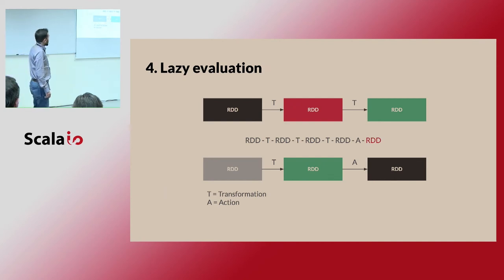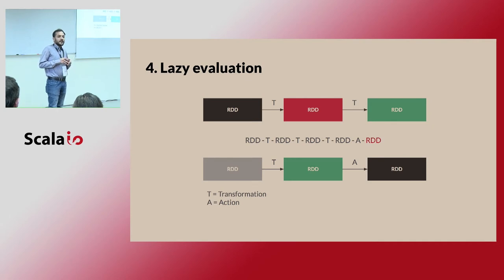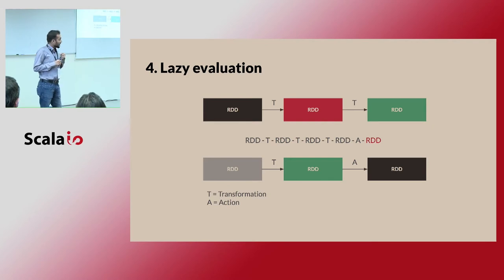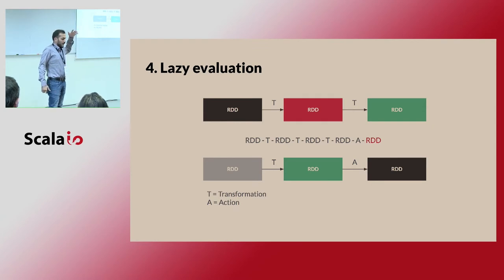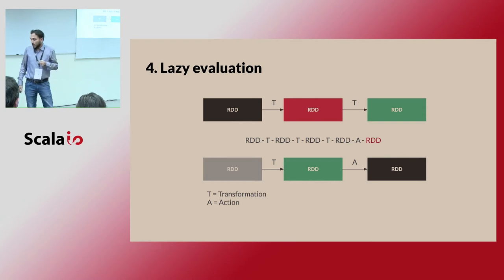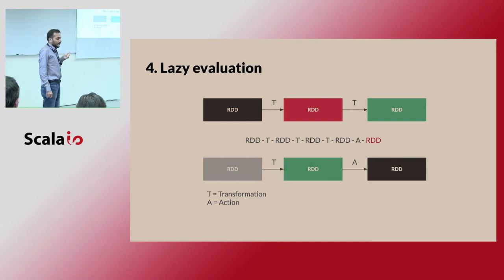RDD uses lazy evaluation. When you work with Spark and create transformations and actions, it generates a directed acyclic graph (DAG). That graph gets executed only when you call an action. Until then, you have the entire transformation list. Any analysis error or exception you encounter will surface at the action level.